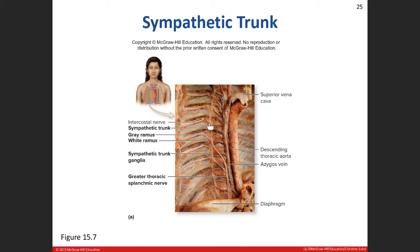Here's our sympathetic trunk running parallel with the spine, with the ganglia forming the bulges. The ganglia contain the cell bodies of the postganglionic neurons. The preganglionic neuron cell bodies are found in the central nervous system — specifically in the lateral gray horn of T1 through L2 of the spinal cord, if we're talking about the sympathetic division.